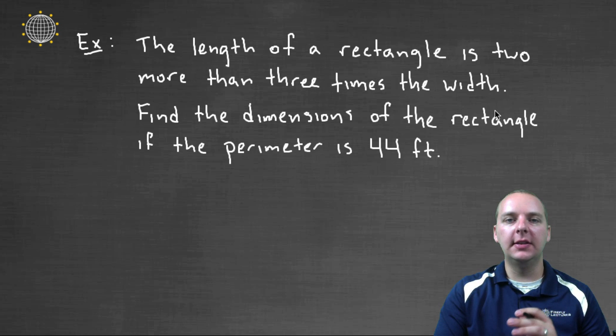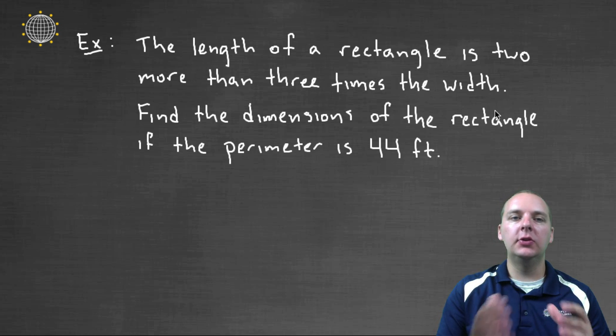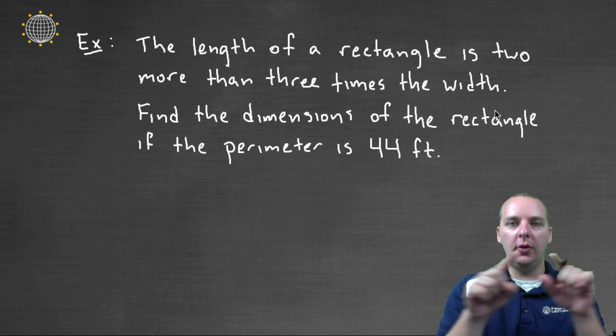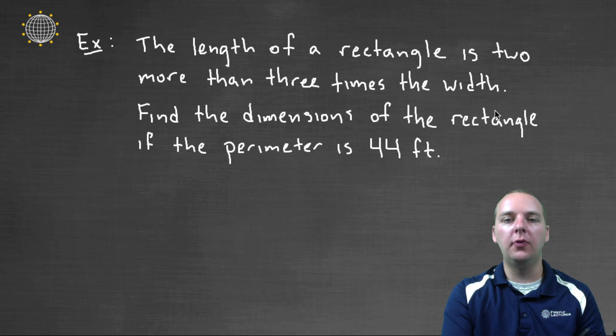Here we have a word problem that says the length of a rectangle is two more than three times its width. And they want us to find the dimensions of the rectangle if the perimeter around the rectangle is a total of forty-four feet.